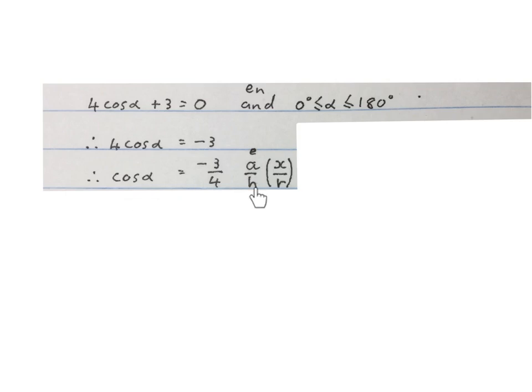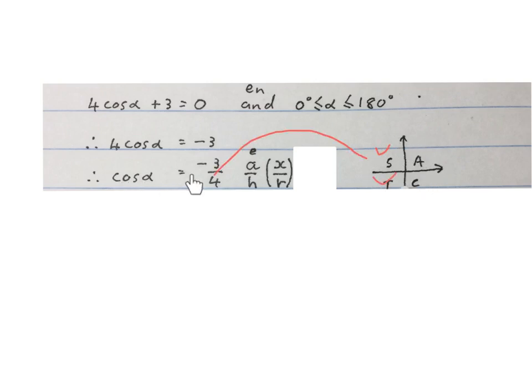Cos we know is adjacent over hypotenuse. For the purpose of this video, we're going to go for x over r. Now we bring this information and this information together in a plan on the Cartesian plane. This part says cos is negative, and cos is negative in the second and third quadrant. I tick it there and I make a tick there. This part says the angle we're looking for lies between 0 degrees and 180 degrees. So we're gonna be in that quadrant or that quadrant.